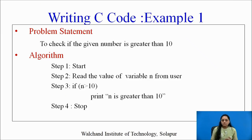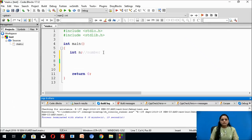Let us write a C code using Code Blocks. The problem statement is to check if a given number is greater than 10 or not. The algorithm: Step 1 — start and read the number. Step 2 — if the number is greater than 10, print the message that `n` is greater. Step 3 — stop.